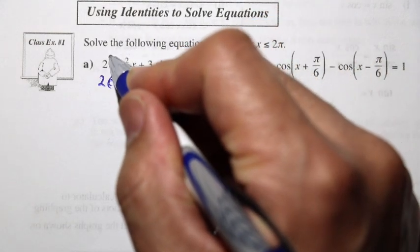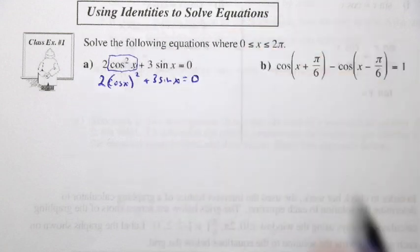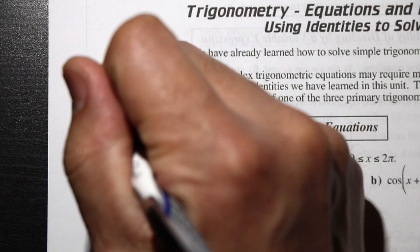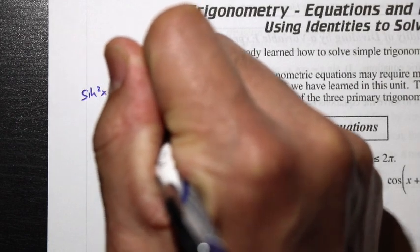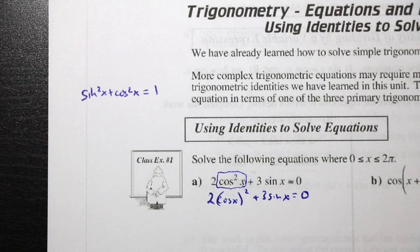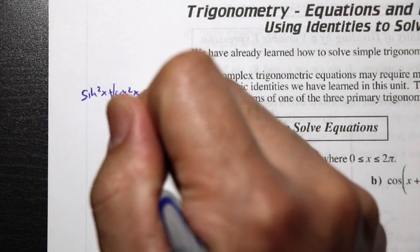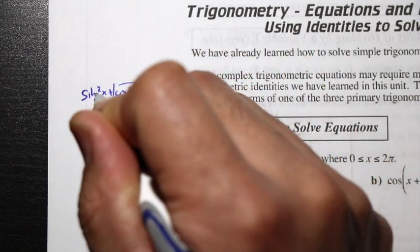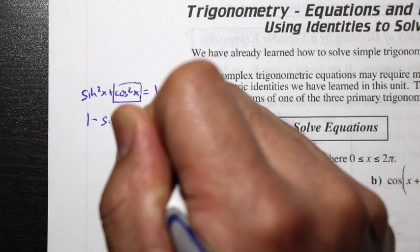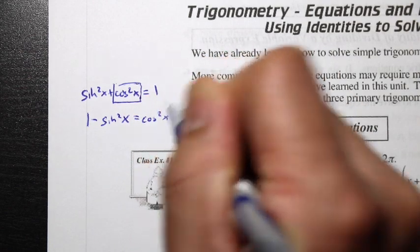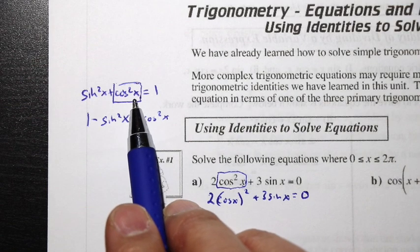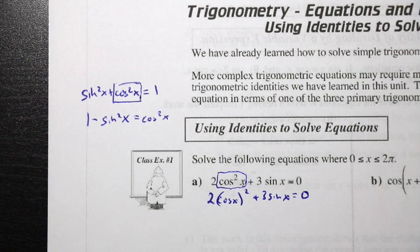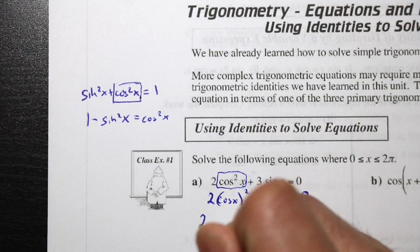We have cos²x, which reminds us of the identity sin²x + cos²x = 1 — my favorite identity. Since that's the case, cos²x can be written as 1 - sin²x.